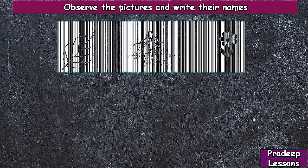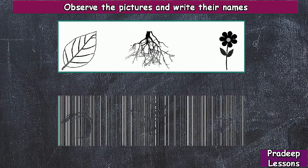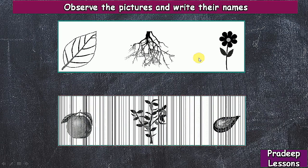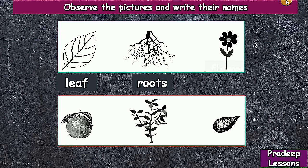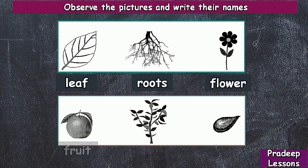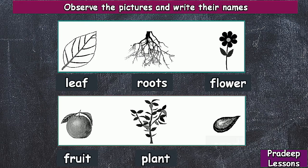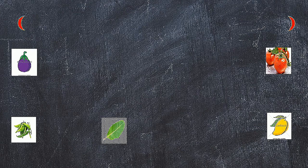Previously we learned the names of plant parts from these pictures. Let us observe them again: leaf, roots, flower, fruit, plant, seed.